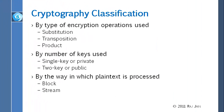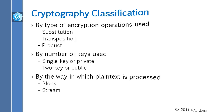There are three techniques that are historically used: substitution, transposition, and product. We will talk about those today. There are two kinds of keys: a single key, which we talked about, and two keys (public key), which we will talk about later. And there are two ways encryption can be done: block or stream — we will not talk about those today. Today our lecture is limited to substitution, transposition, and product.